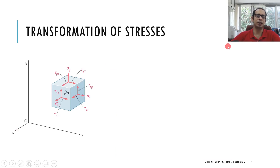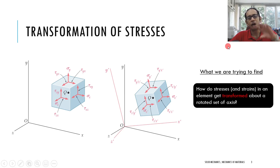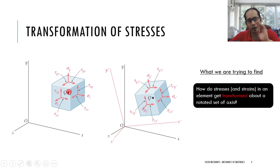What this chapter looks at is: if you have a 3D infinitesimally small element with a set of stresses acting on it, and you are looking at a rotated element at the same point Q — at a different plane of section — how do the stresses and strains get transformed when you look at that different plane?